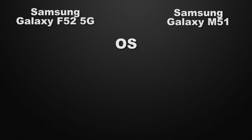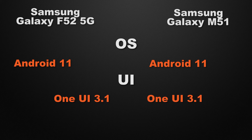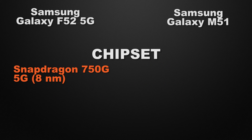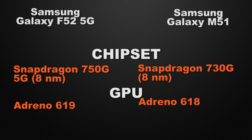Moving to the performance of the devices: both F52 and M51 run Android 11 with One UI, so it's a tie on both counts. The F52 is powered by a Snapdragon 750G 5G based on an 8nm processor, whereas the M51 uses a Snapdragon 730G also based on 8nm, so the winner is F52 for faster processing speed. For GPU, the F52 has Adreno 619 and the M51 has Adreno 618, so F52 wins for more fps in games.